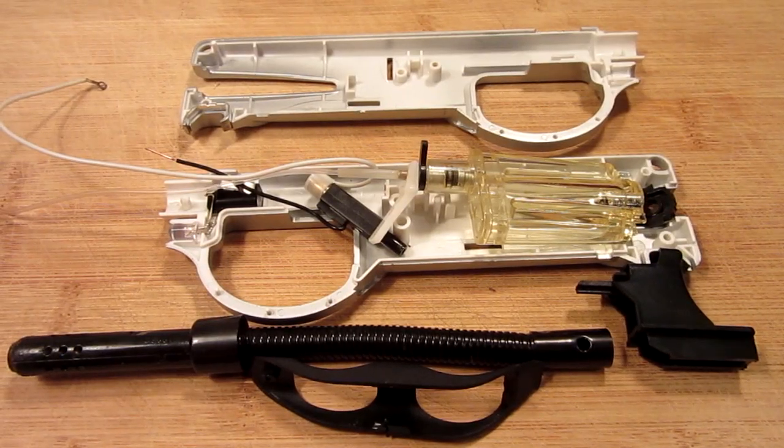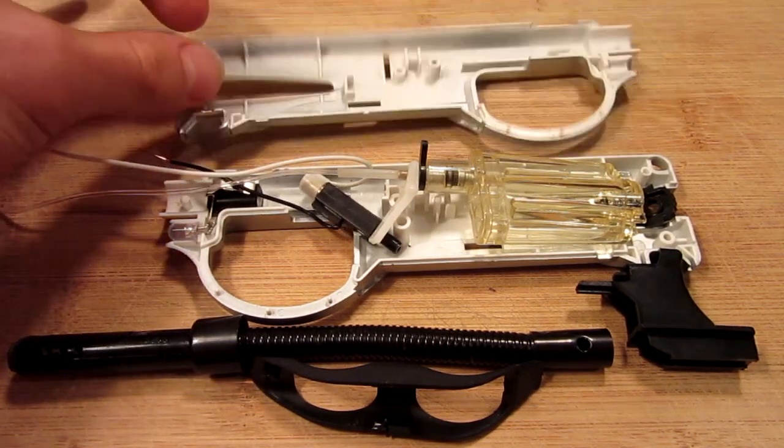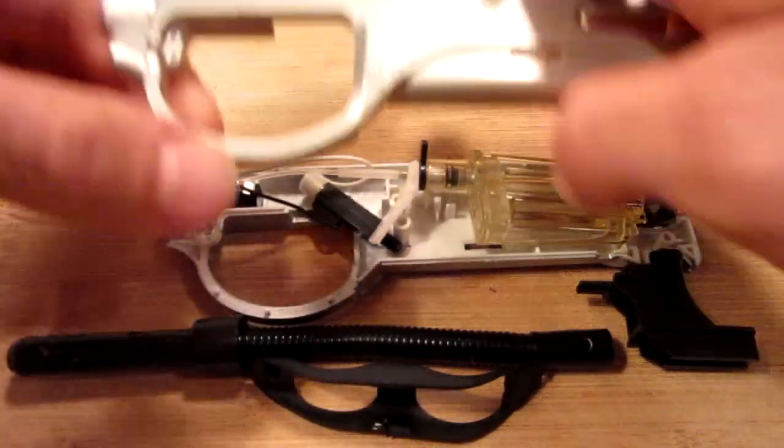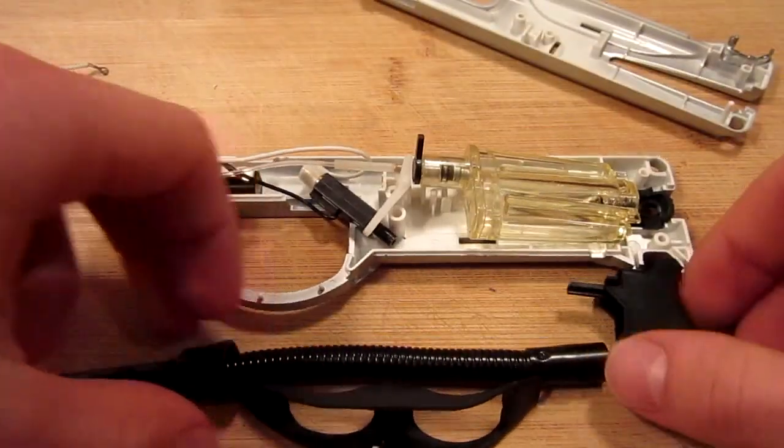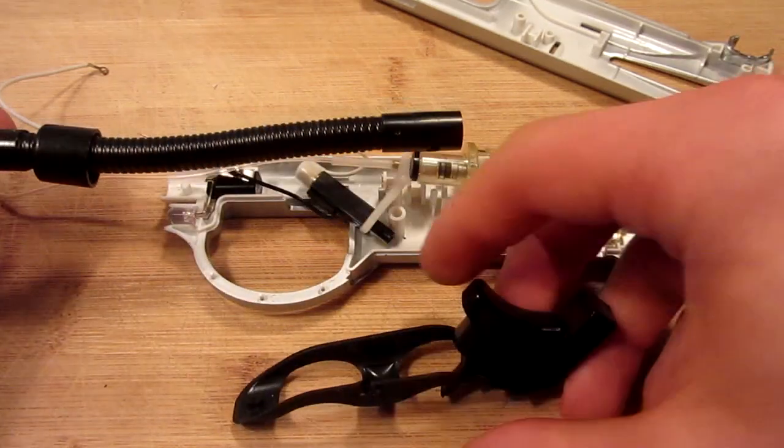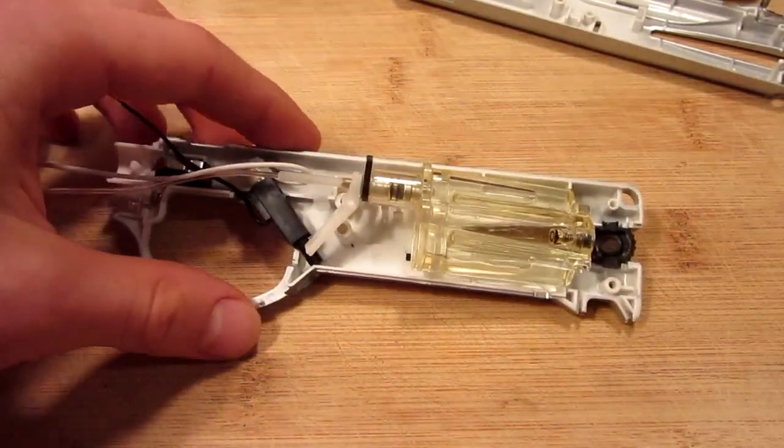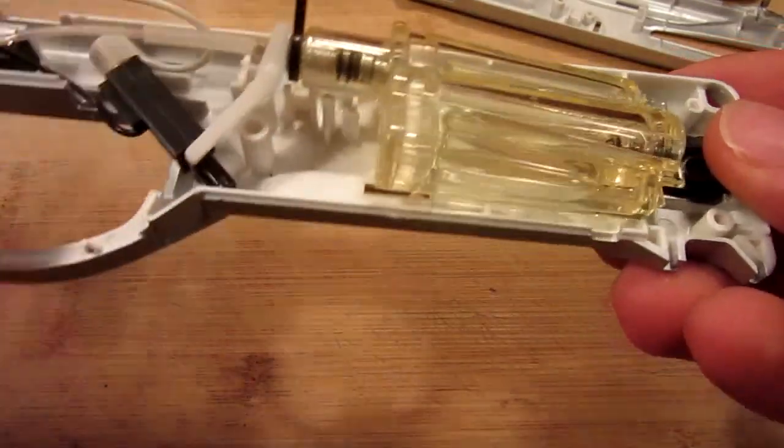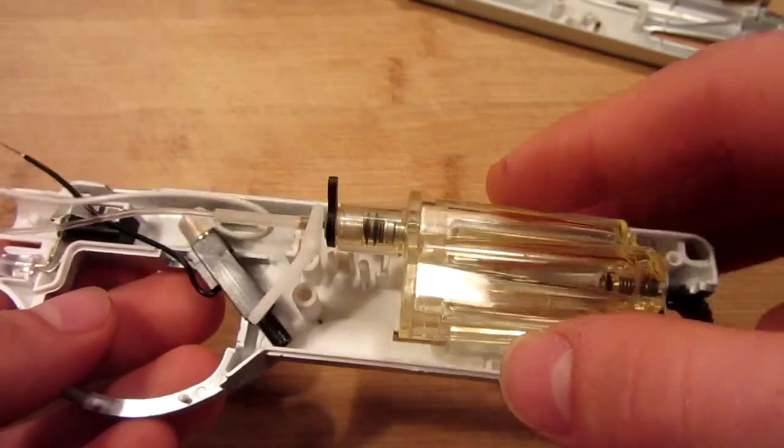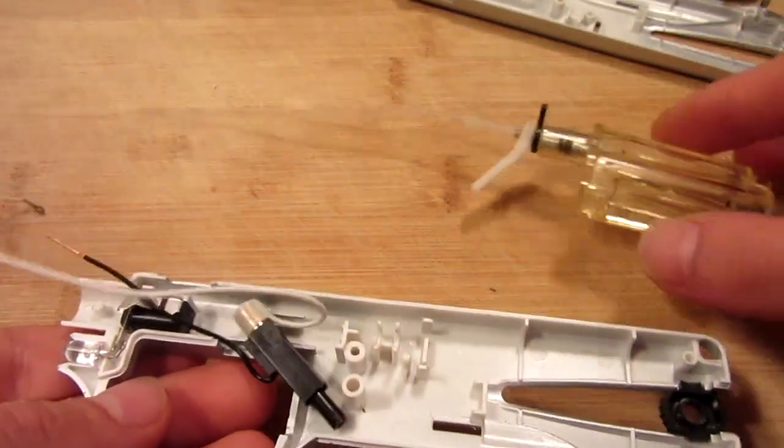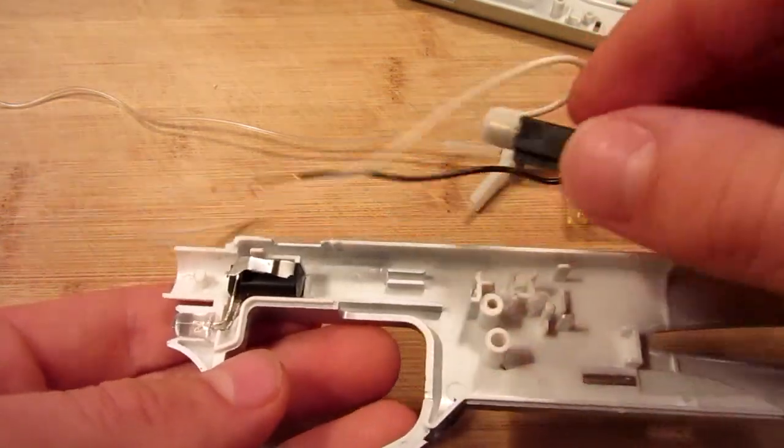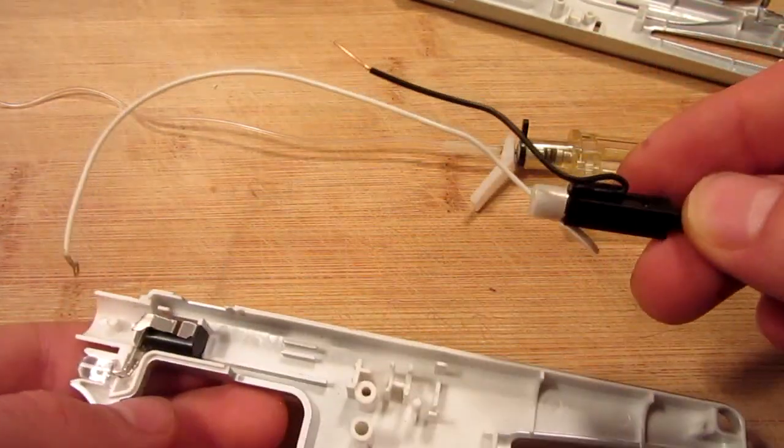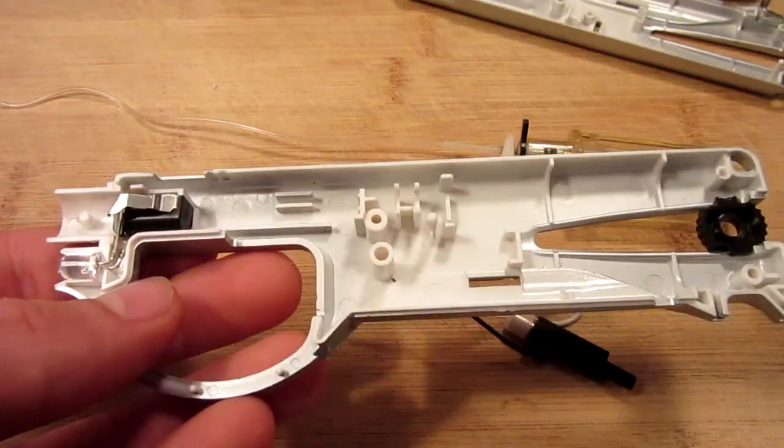You can start by disassembling your lighter. As you can see, I've already done so. I won't show you on camera, but basically just undo some screws, take off the top half, take out the barrel, the trigger. You don't need any of that. All you will need from your lighter is the gas canister with the pipe or gas line attached to it, and this little piezoelectric sparker. Everything else is scrap.